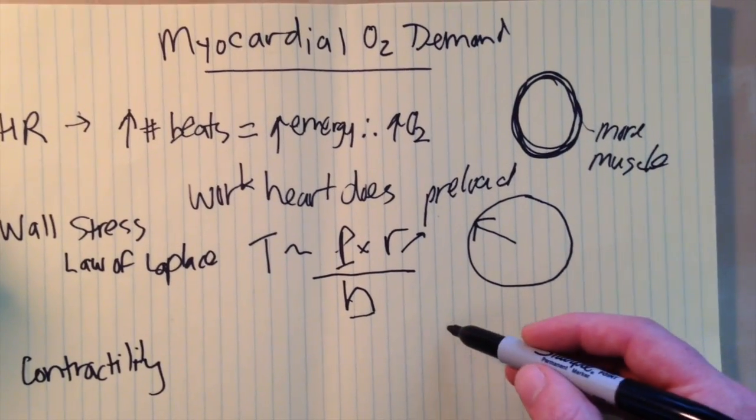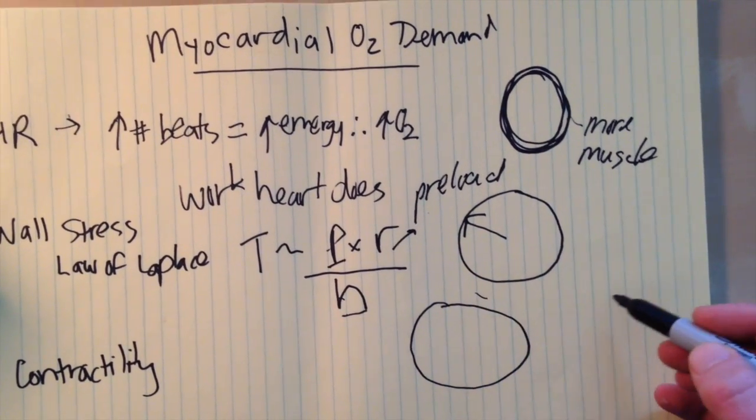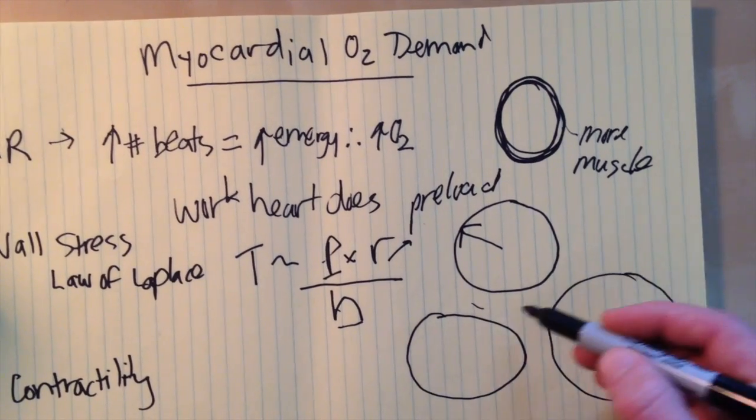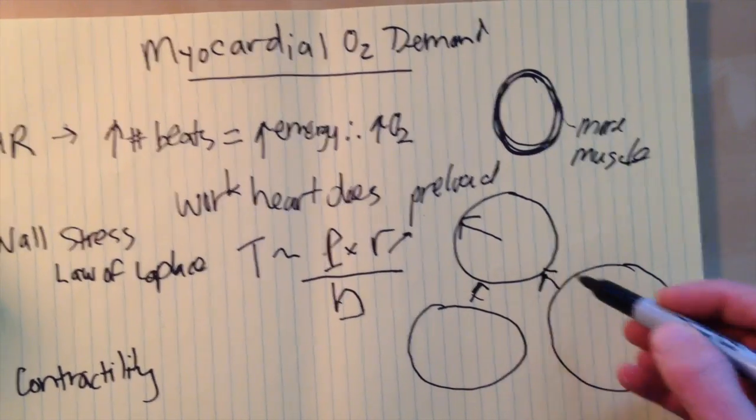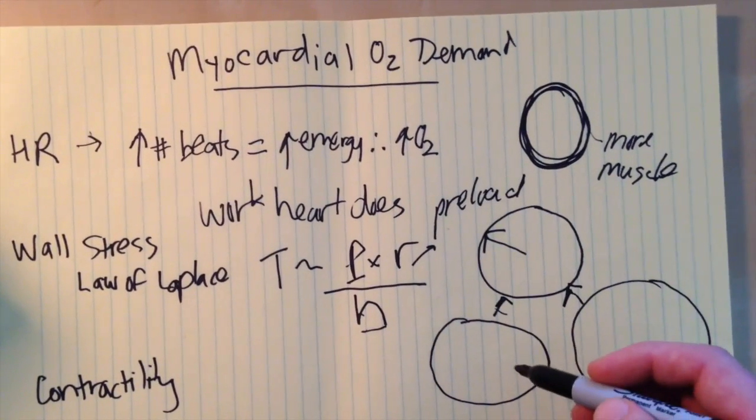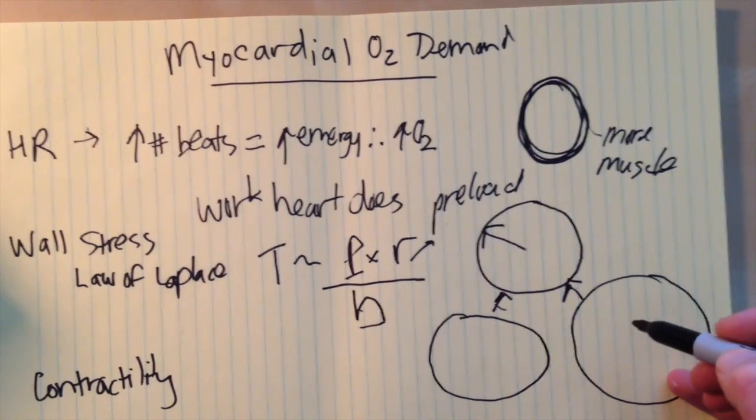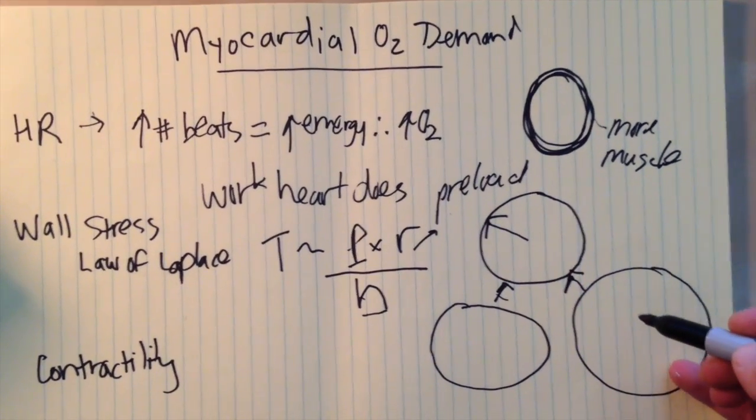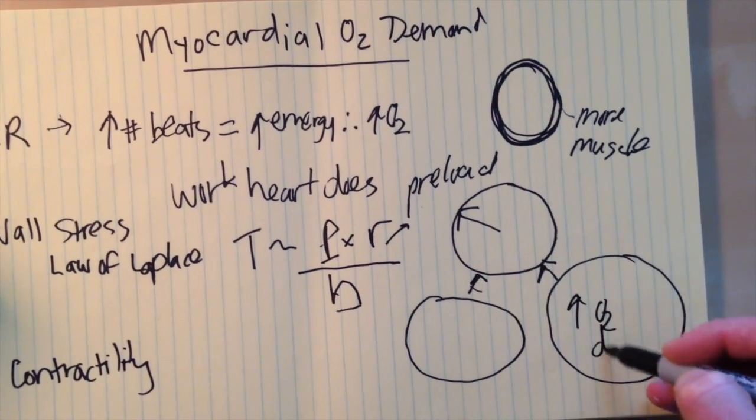So if you had a ventricle that was filled this much versus one that was filled this much, in order to get back to this original size, it's going to take less work in this one and more work in this one. So the wall stress and thus the myocardial oxygen demand is going to be higher, increased O2 demand.